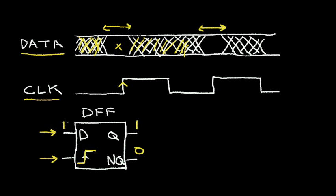If I have a 0 for the data signal and the clock transitions high, a 0 will be transferred to the output Q. The NQ will be the opposite — it will be a logical 1. So let's consider how we can design a D flip-flop so that when the clock transitions high, we grab the data. When this later clock transitions high, we grab this data.